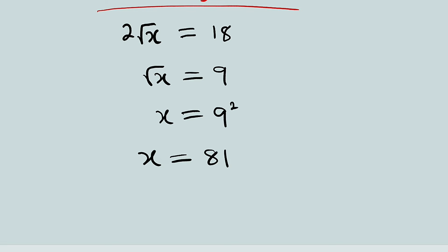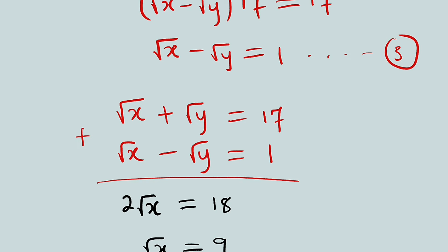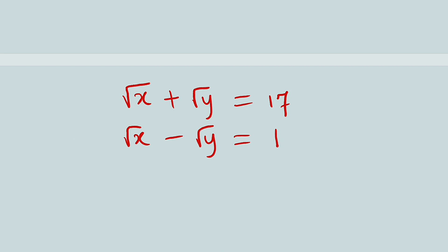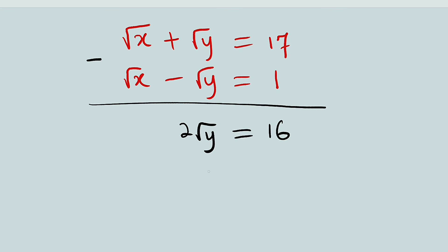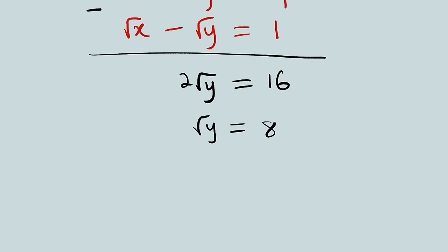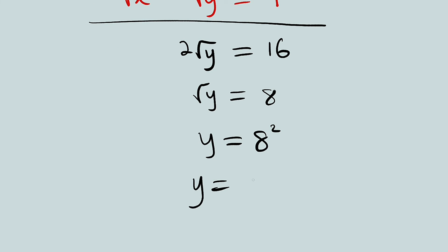Finally, x equals 81. Now I want to subtract the two equations instead. If we subtract, square root of x minus square root of x is 0, and square root of y minus negative square root of y gives us positive 2 square root of y. On the right-hand side, 17 minus 1 gives us 16. Dividing both sides by 2, square root of y equals 16 divided by 2, which is 8. Taking the power of 2 on both sides, y equals 8 squared, and finally y equals 64.